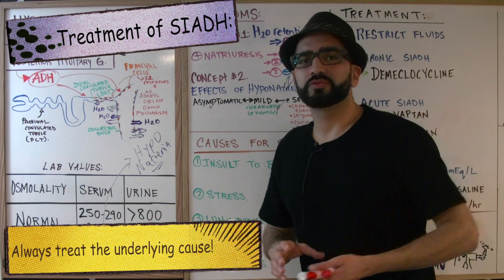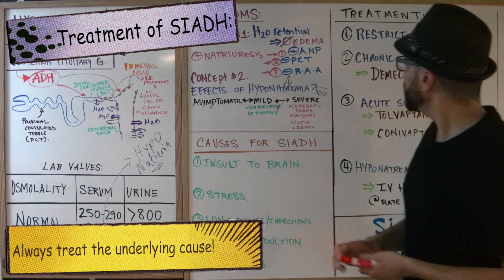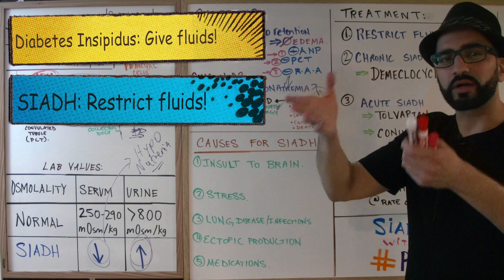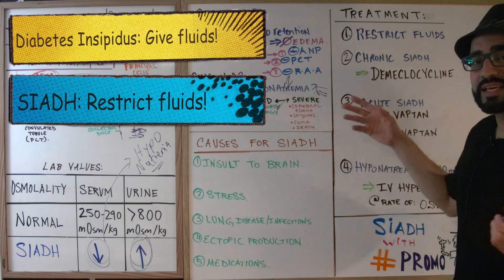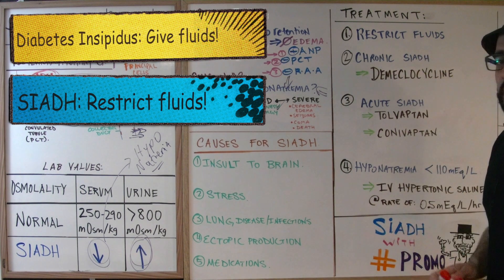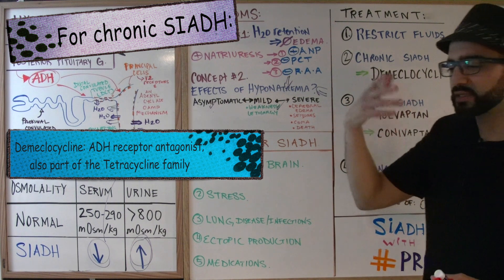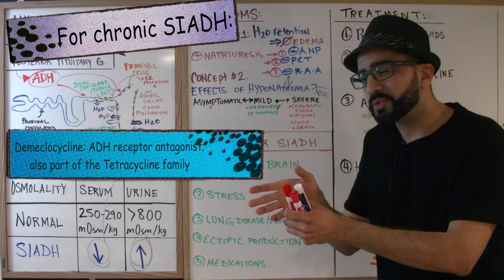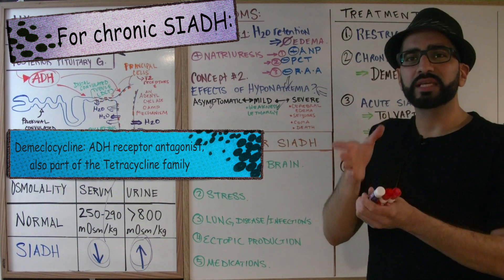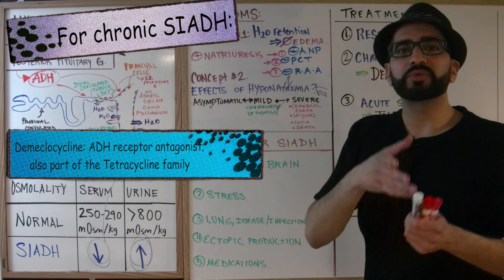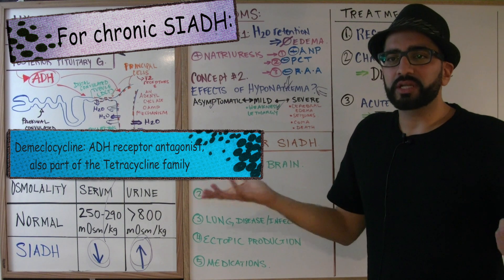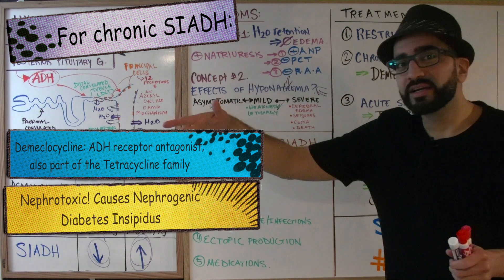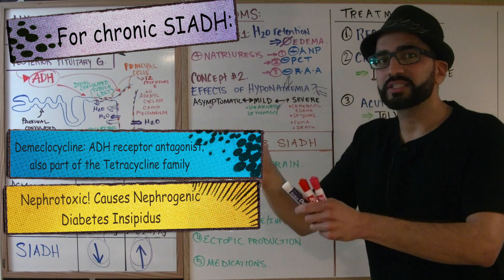For treatment, always treat the underlying cause first. Unlike in Diabetes Insipidus where you encourage fluid intake, in SIADH you restrict fluids. For chronic SIADH, use demeclocycline — it blocks antidiuretic hormone receptors at the nephron level, acting as a receptor antagonist. However, a critical side effect of demeclocycline is that it's nephrotoxic and can cause nephrogenic Diabetes Insipidus, so always make that connection.